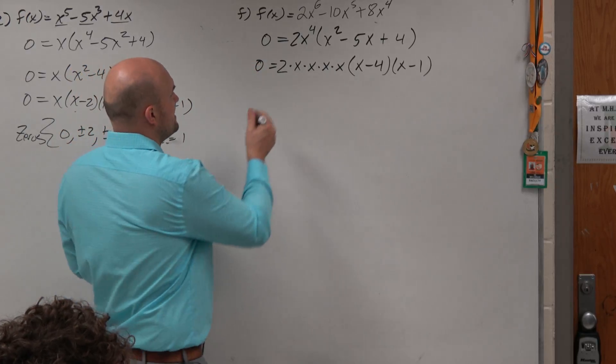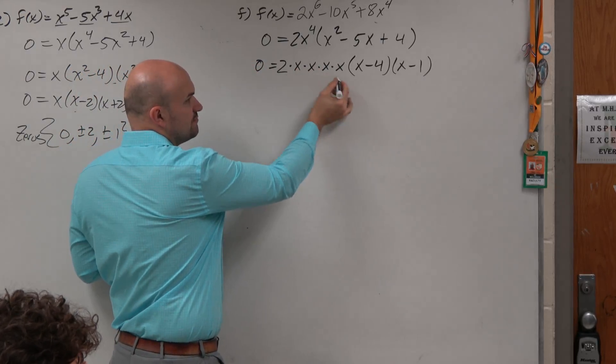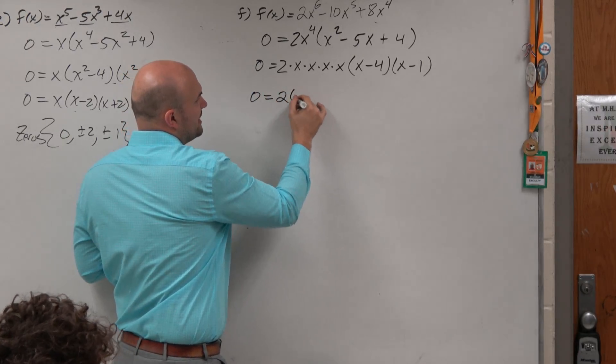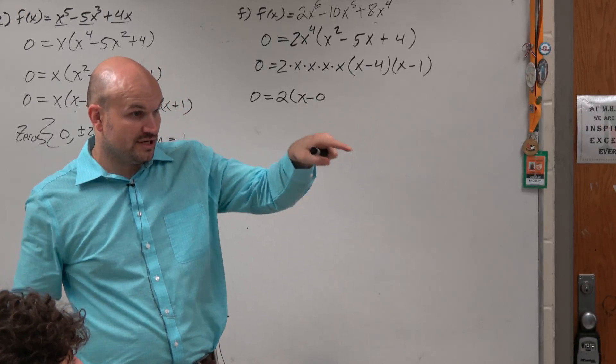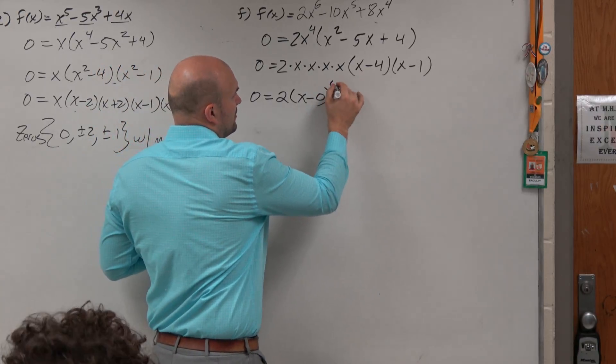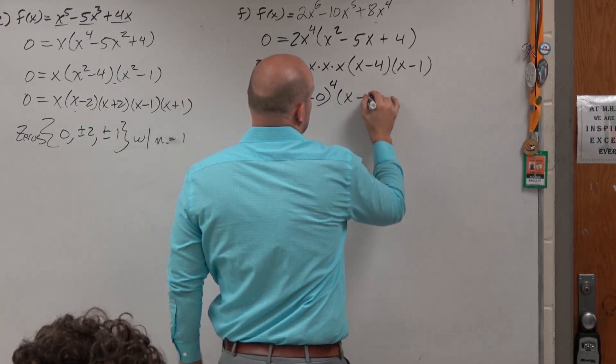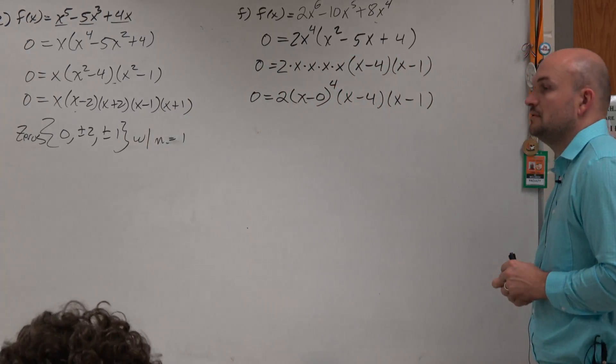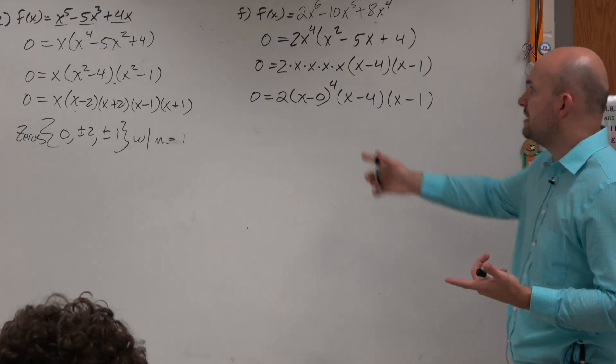Now there's another way we can represent that. If we know that each of these by using the zero product property is going to give us 0, then we know that the zero is c, right? c is equal to 0, and per our definition, raised to the 4th power times x minus 4 times x minus 1. So you could write it like that as well.